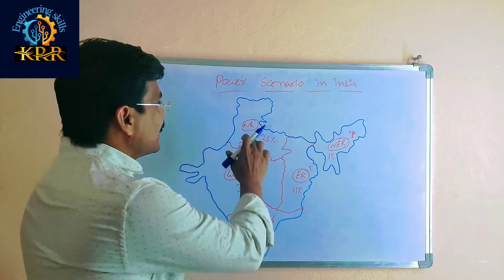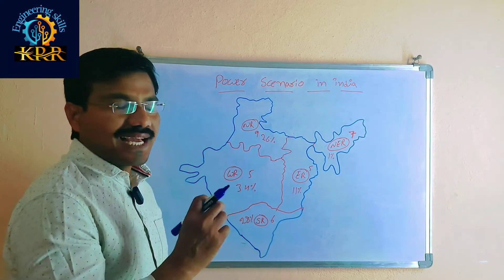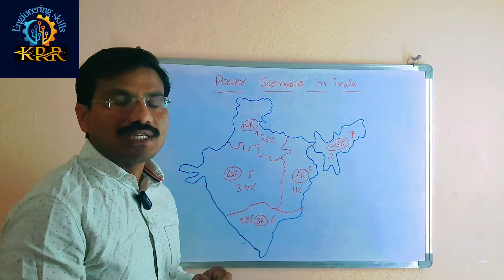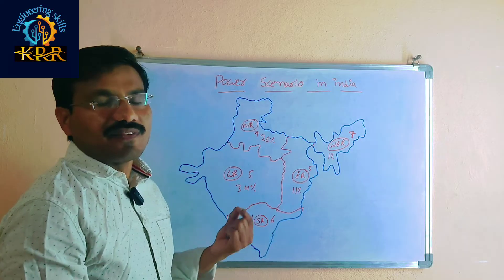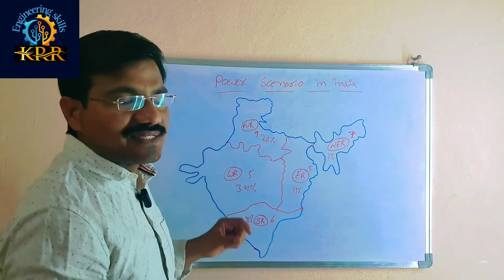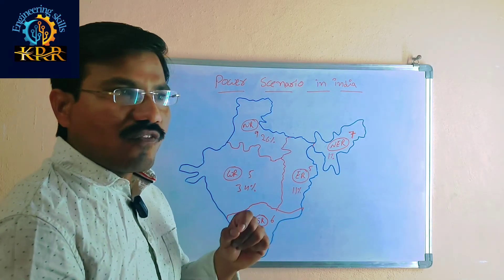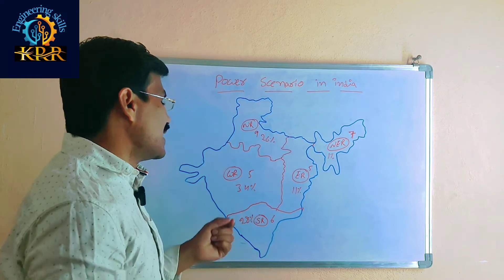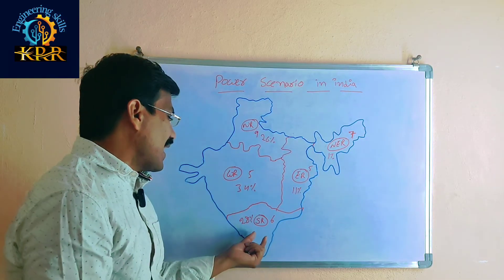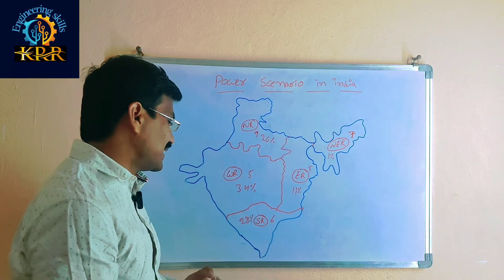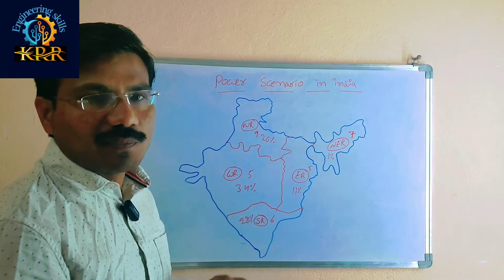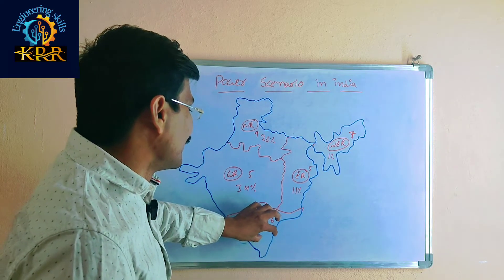In the North region, there are 9 states and 26% of power generation takes place. In the West region, there are 5 states and 34% of power generation takes place. In the South region, there are 6 states and 28% of power generation is generated.